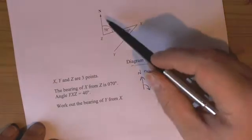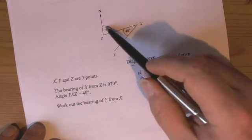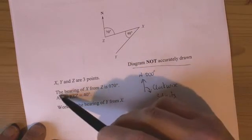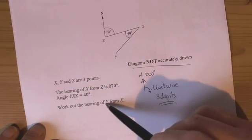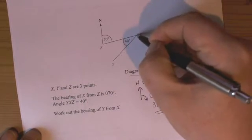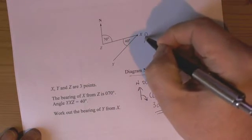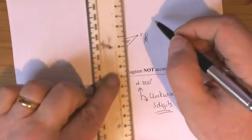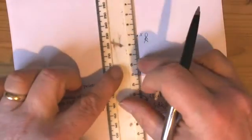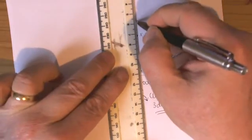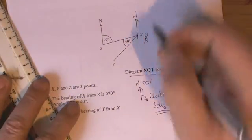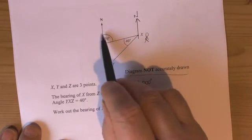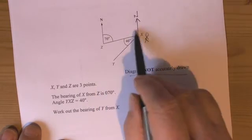So let's have a look at the information we've been given then. We've got a 70 degree turn there, we've got a 40 degree turn there. It wants us to find the bearing of Y from X, so it's really important we recognise that means that I'm stood at X. So the first thing I need to add onto this diagram is a north line, which will be parallel to the other north line. And there's our big clue, because this one's not about measuring, it's about using angle theories.